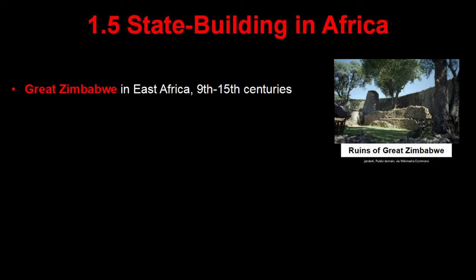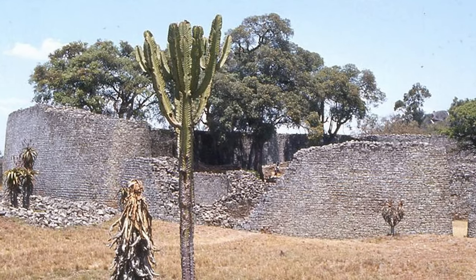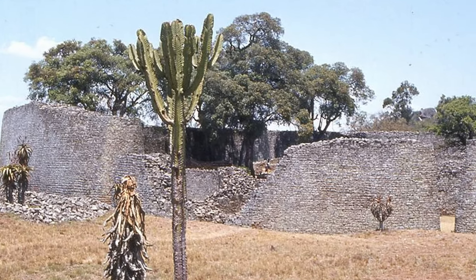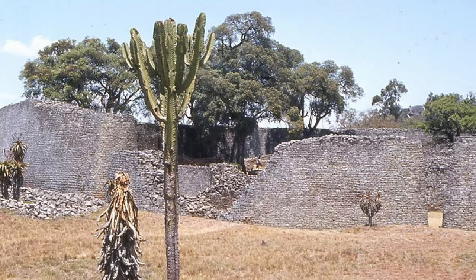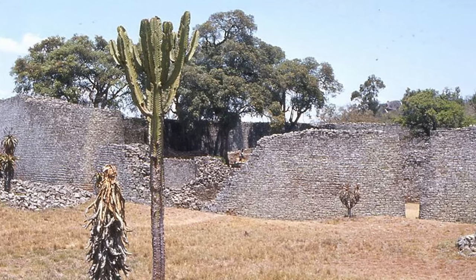Great Zimbabwe was a powerful and rich state located near the coast of East Africa. Like many of the states in Unit 1, they enriched themselves by controlling important trade routes. Great Zimbabwe is probably most famous for its massive and sophisticated architecture.